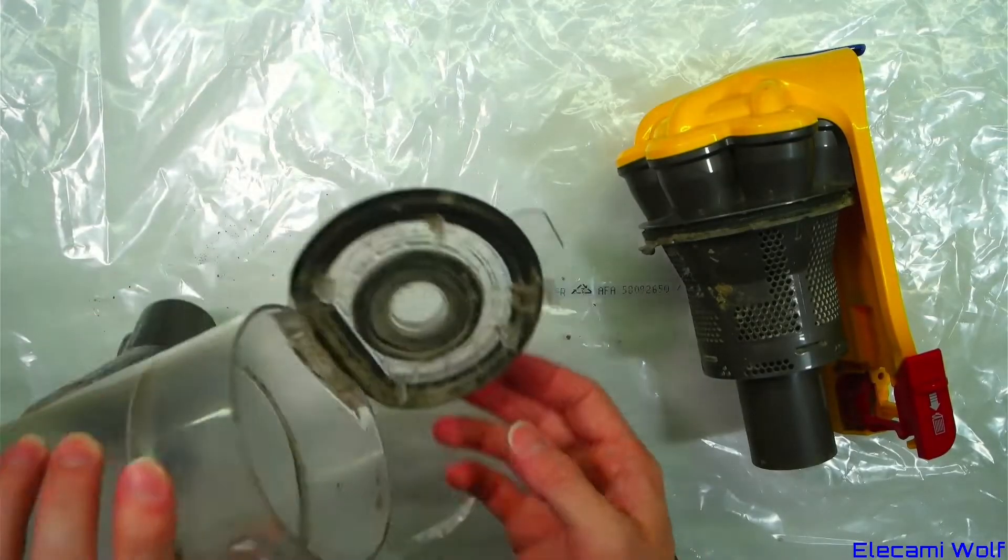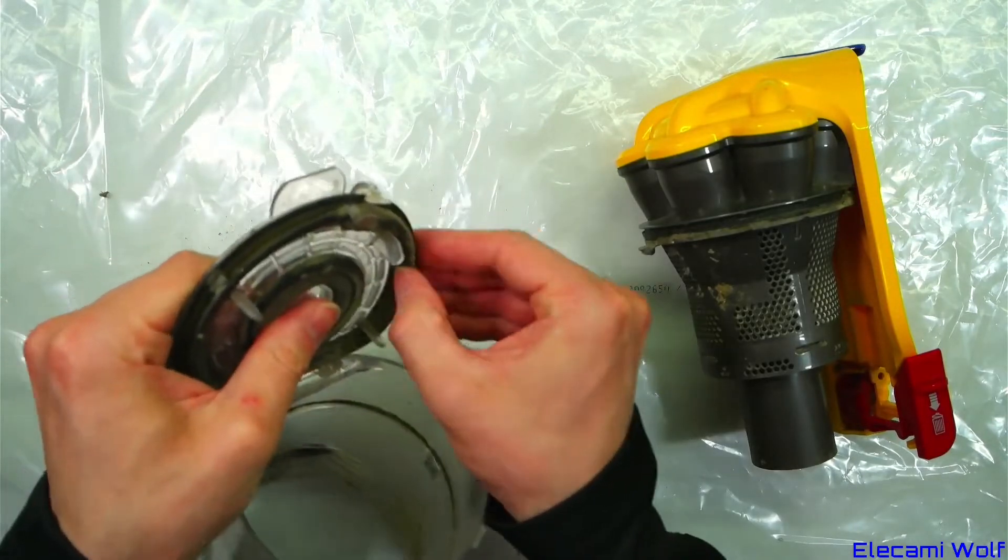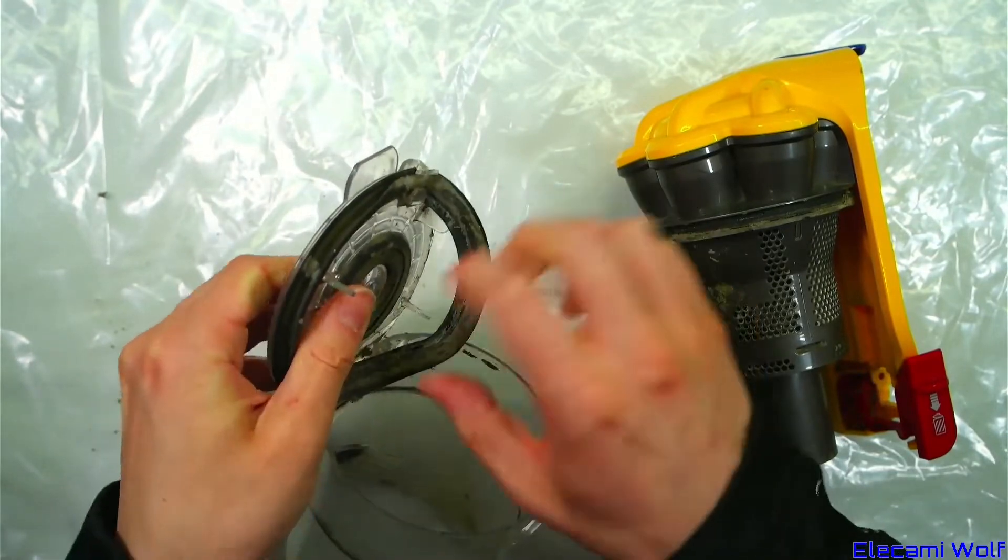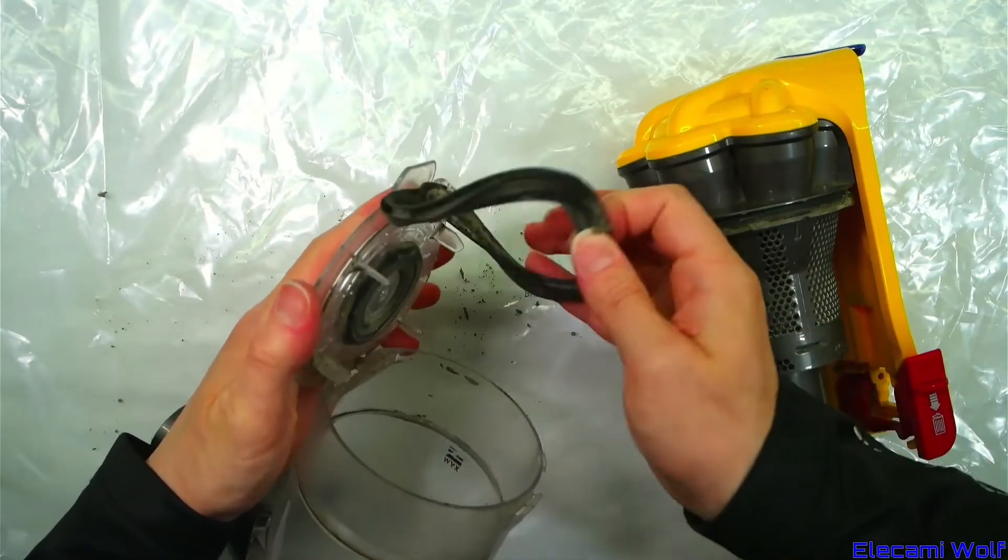To remove these seals, you can just pull them off, and then get in there and clean them out. Give them a good scrub and then push them back in.